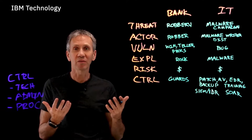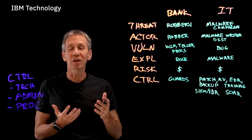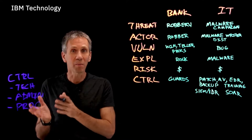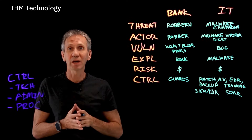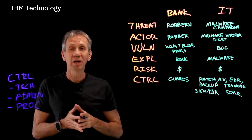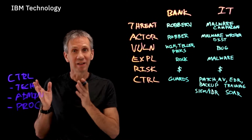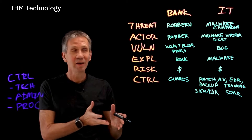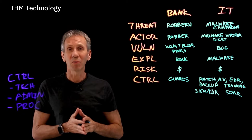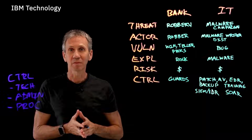For incident response, we use a SOAR — a security orchestration, automation, and response platform — that brings all of these things together. So whether you're securing a bank or an IT system, these are the things you must consider. Now that the money is in the IT system, that's where we need to focus our efforts.